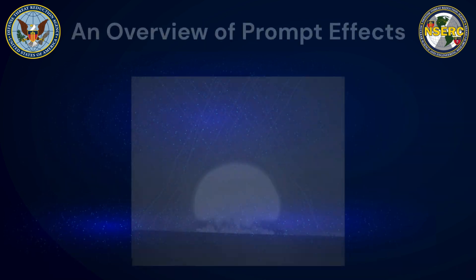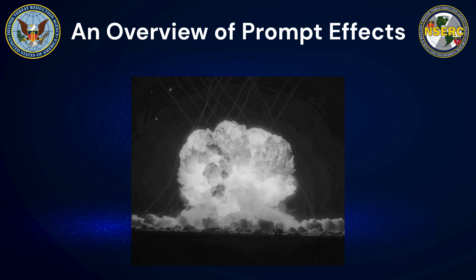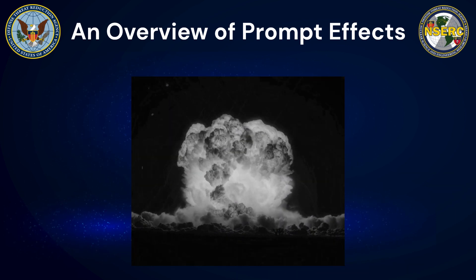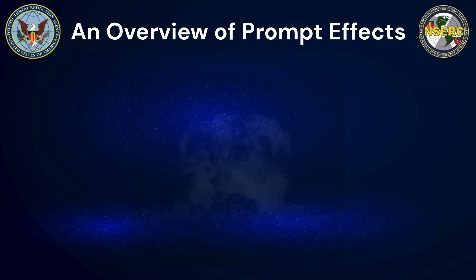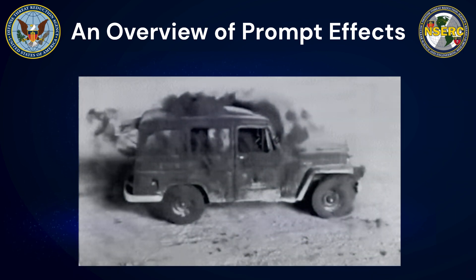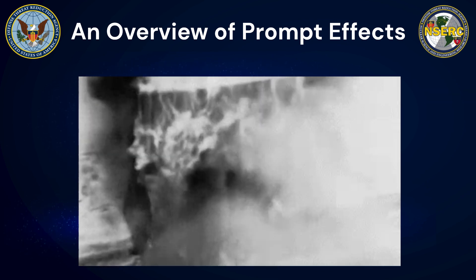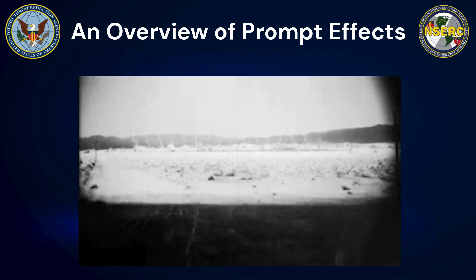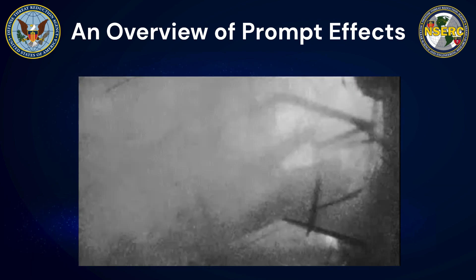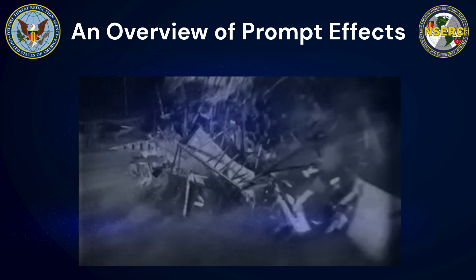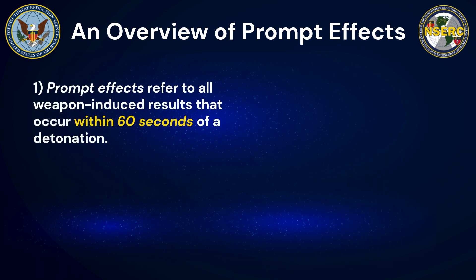This presentation is entitled 'An Overview of Prompt Effects.' The purpose of this briefing is to introduce the three principal outputs that rapidly follow from nuclear weapon detonations occurring within the Earth's atmosphere, as well as the general physics that caused them. An overview of these topics will better prepare viewers for future, more detailed presentations on each of these effects as well as their associated phenomena.